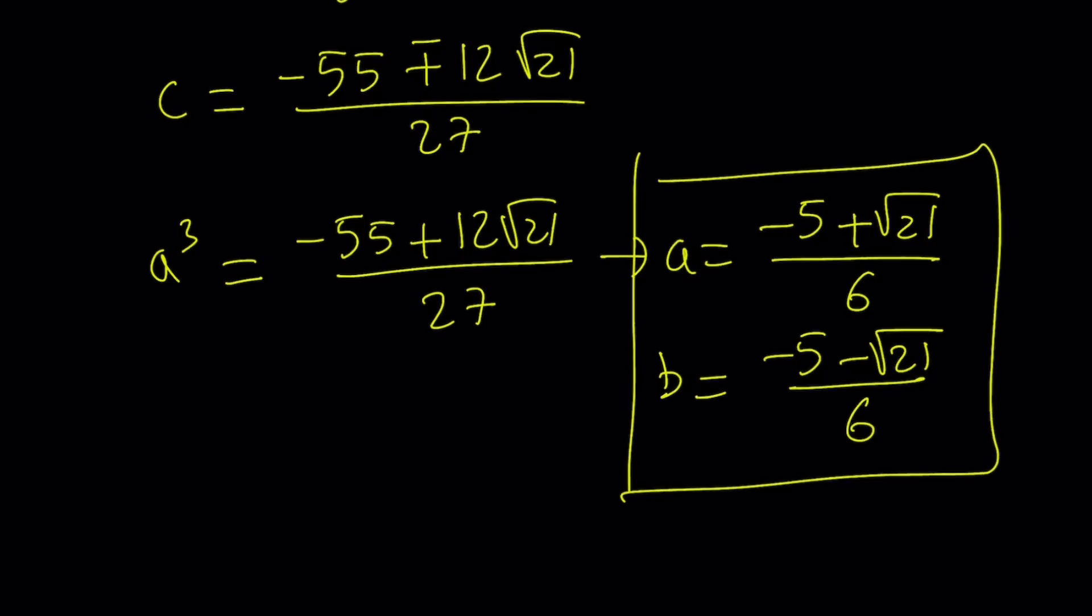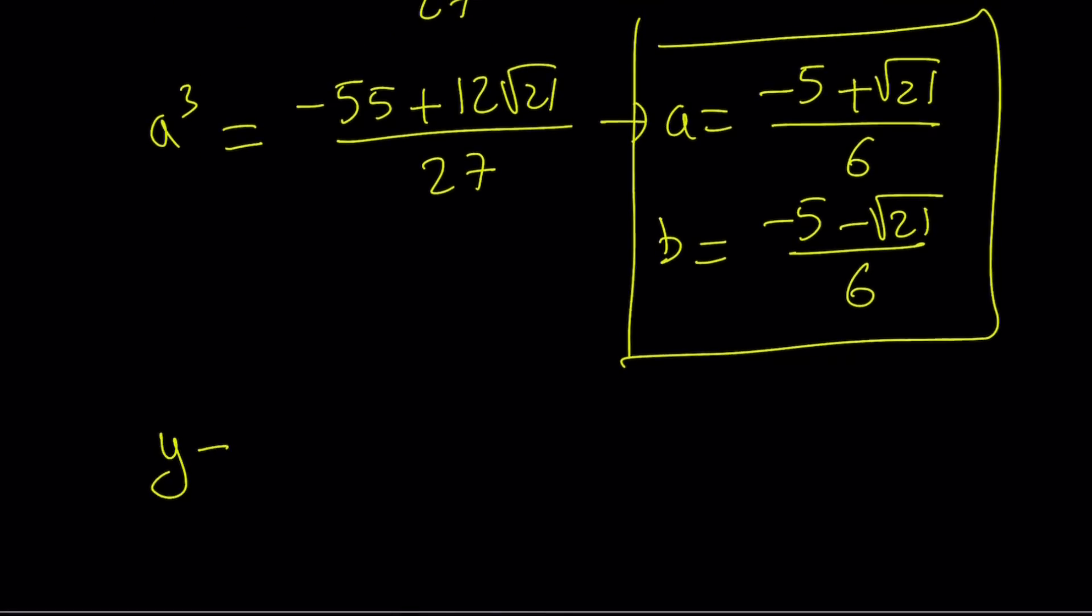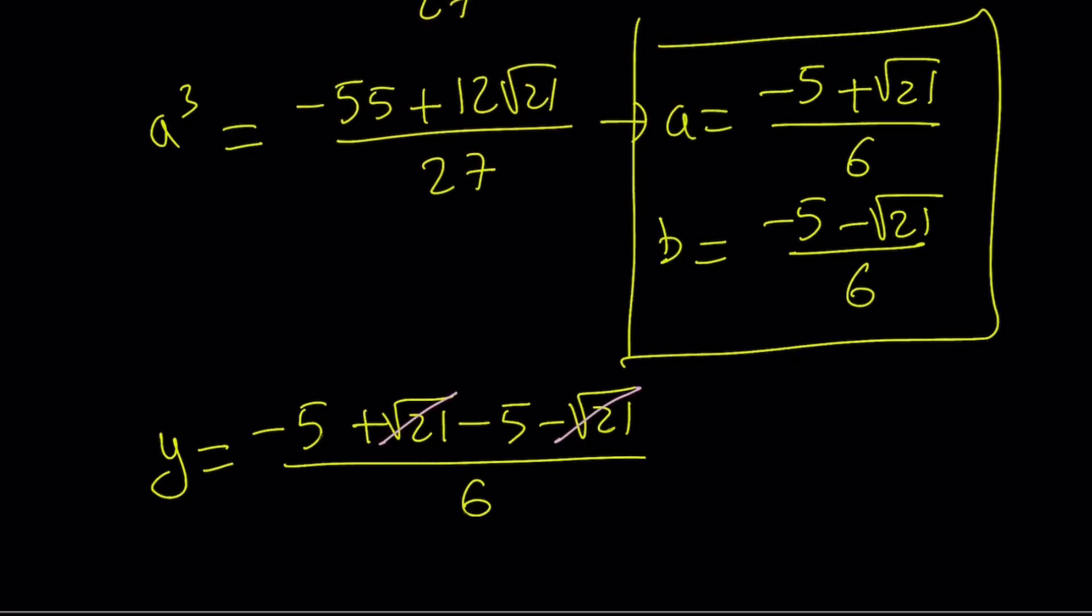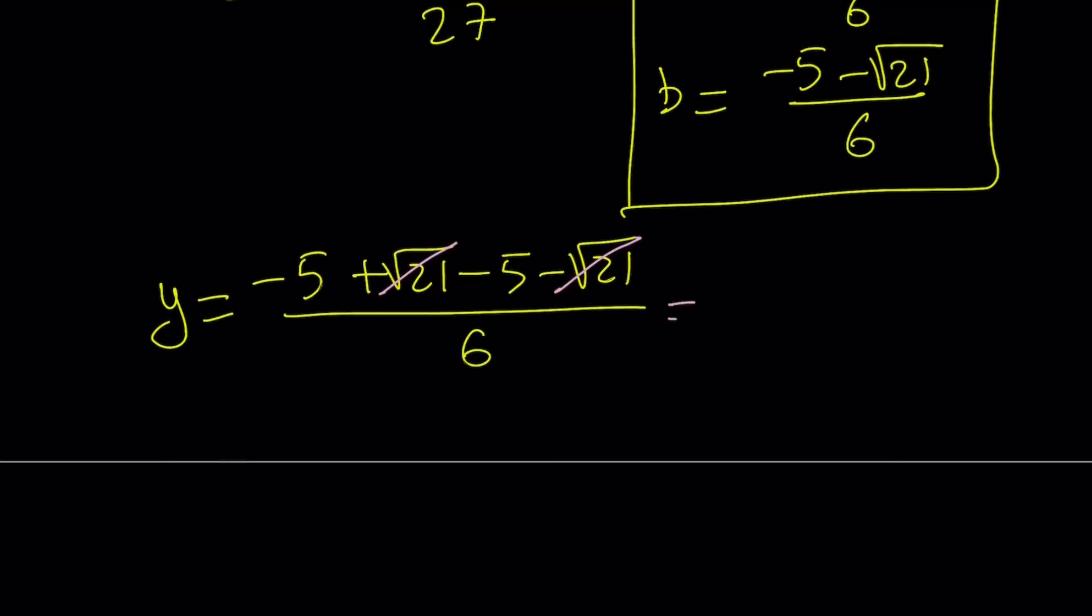And y is equal to a plus b. So we can now write the value of y easily. Notice that they have the same denominator, so I can just add them. If you add them, you're going to notice something super duper nice. Some terms are going to cancel out. This becomes negative 10 over 6, which can be written as negative 5 thirds.